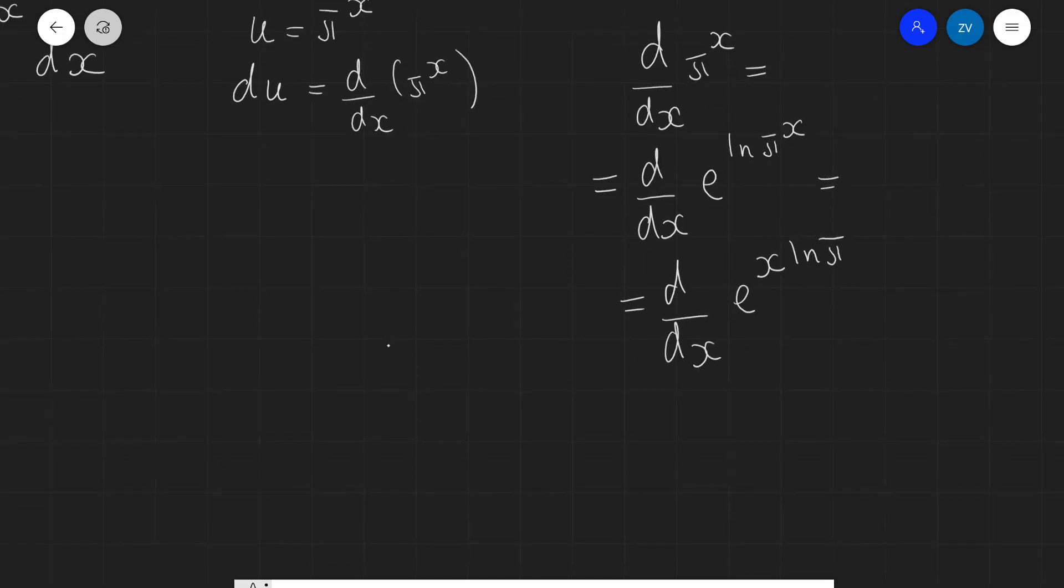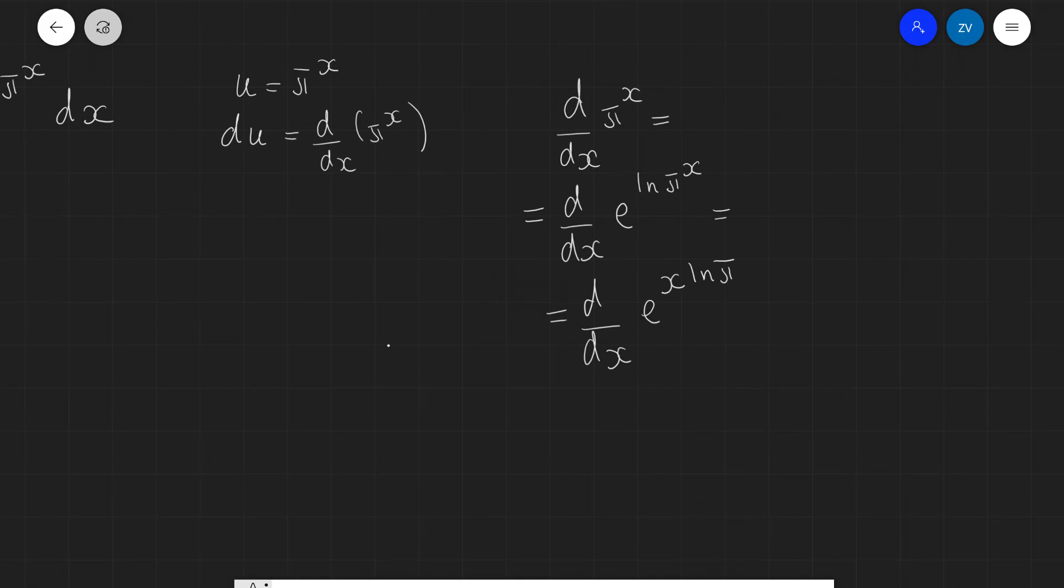And now I can actually use the chain rule. Because this will just be equal to the derivative of the whole expression. So remember the derivative of e to the power of x is just e^x. So this will be equal to e^(x ln π) multiplied by the derivative of the inside function.